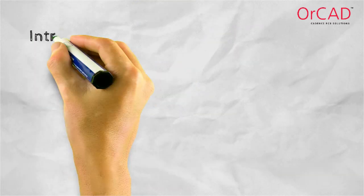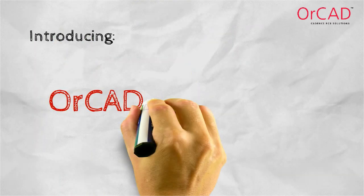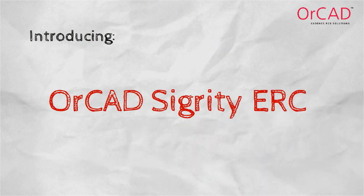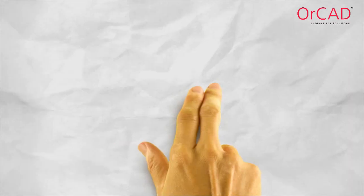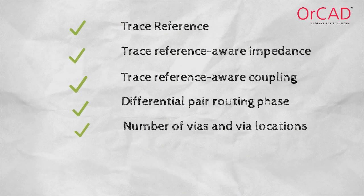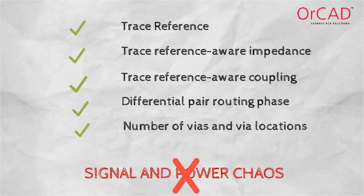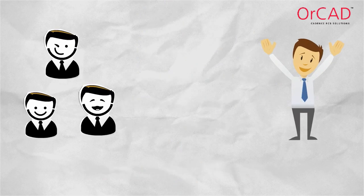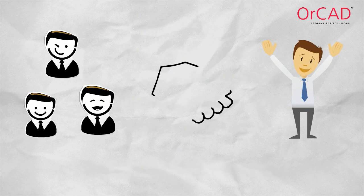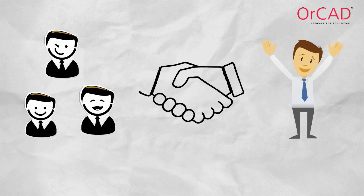Only using ORCAD Sigrity ERC are you able to perform this level of electrical rule checking early in the design stage and create an efficient process, eliminating signal and power integrity chaos and providing a collaborative design environment between your PCB design team and signal integrity expert.